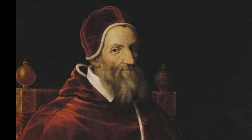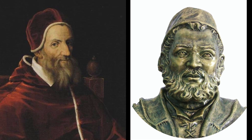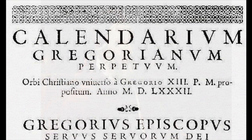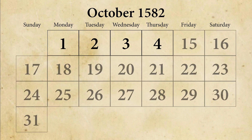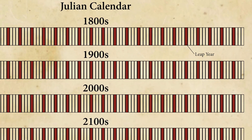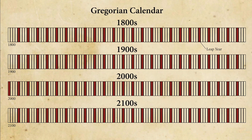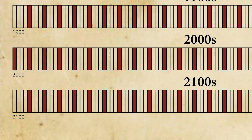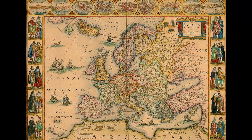Pope Gregory XIII commissioned astronomer Aloysius Lelius to calculate what date it should really be and devise a new system to prevent further drift. The new Gregorian calendar was introduced in 1582, and Thursday, October 4th was followed by Friday, October 15th — skipping 10 days ahead. The leap day would also only occur 97 times instead of 100 times every 400 years. It is omitted in years divisible by 100, except for years divisible by 400. So the year 2000 was a leap year, but the year 2100 will not be. With the implementation of the Gregorian calendar, the Catholic world jumped ahead 10 days.